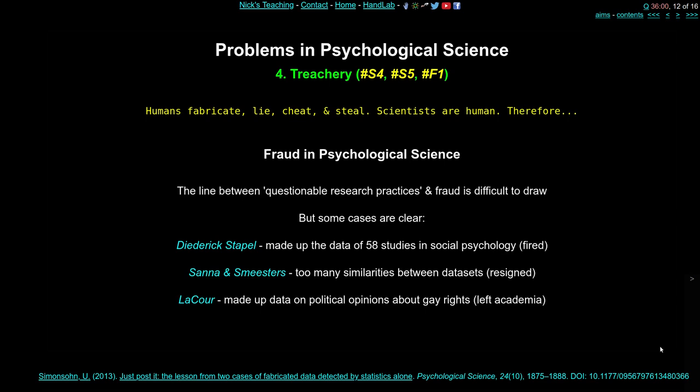In the final section I want to talk about fraud and treachery. Most of what I've been describing is probably unconscious — scientists unaware of the statistical problems they're creating — but there's a line between that and plain fraud. We know humans fabricate, lie, cheat, steal, and break rules, and scientists are human, so we should expect some scientists to commit fraud. Let's look at a couple of cases in psychology where people were caught and lost their jobs.